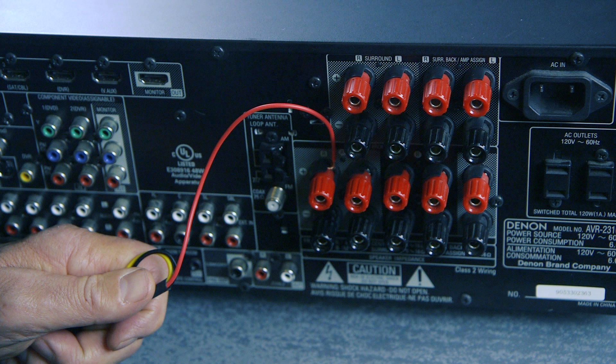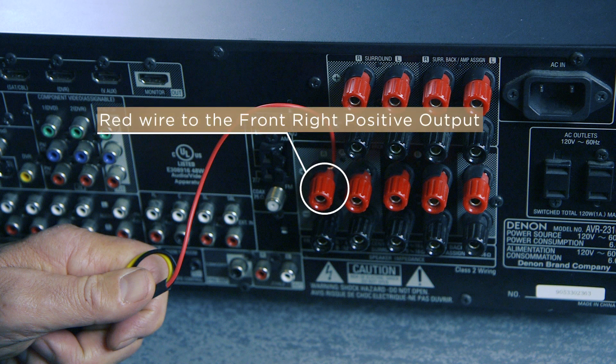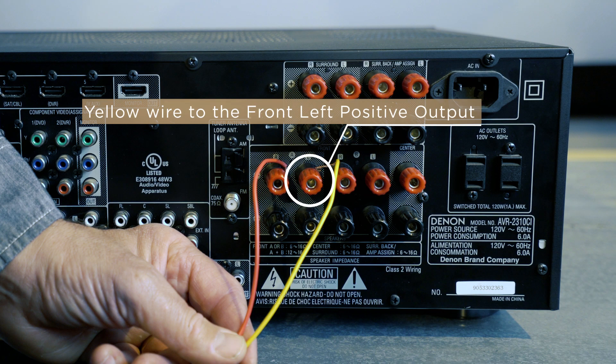With your amplifier off, first connect the red wire to the amplifier's right positive speaker output terminal. Then attach the yellow wire to the amplifier's left positive speaker output terminal.